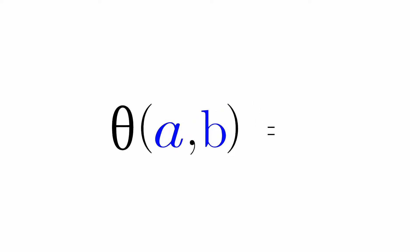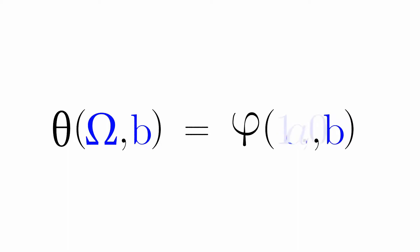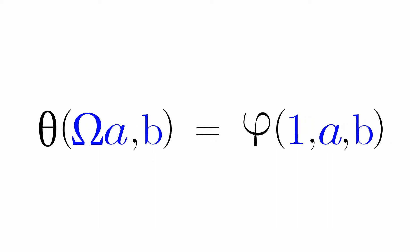Long story short, theta(a, b) is equal to phi(a, b). If we do omega(b), this is equal to phi(1, 0, b). If we do omega plus a, this will be equal to phi(1, a, b). If we do omega times a, this will be equal to phi(a, 0, b).